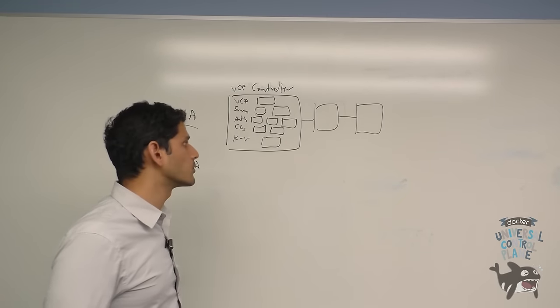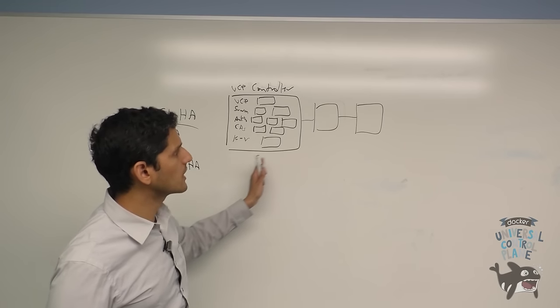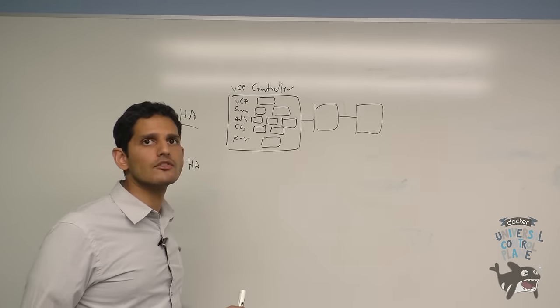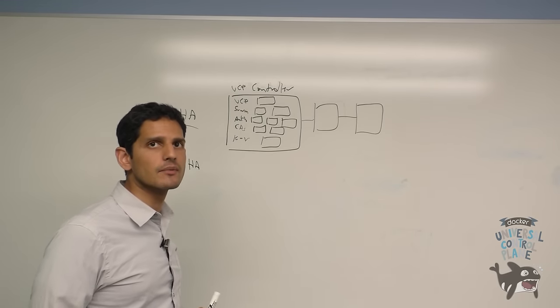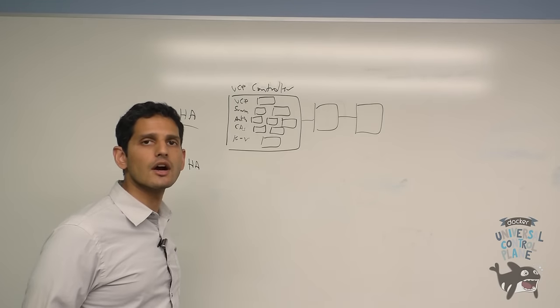Also the performance of the deployment. Since the key value store is replicating information across all these controllers, if you have more controllers and there's more information to replicate, which may bring down some of the performance of the cluster. So these are the trade-offs that you have to make in order to ensure high availability.